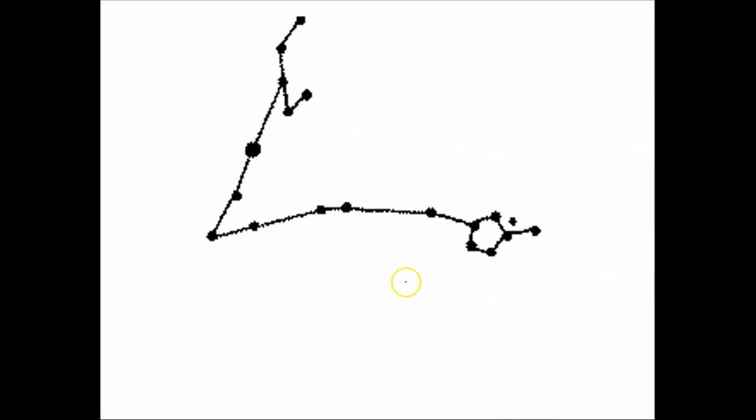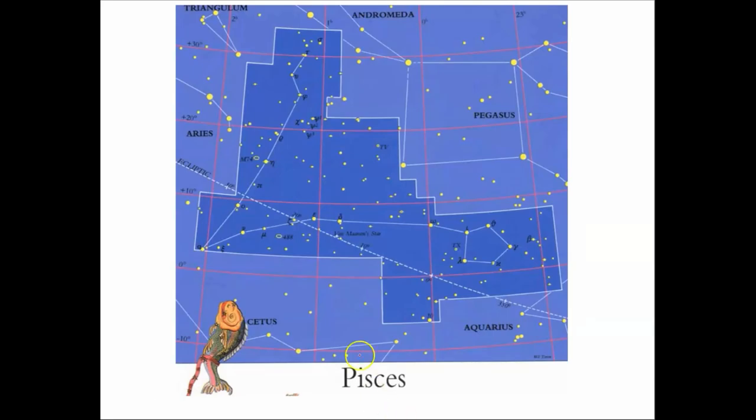We have Pisces. This right there is the asterism where we recognize the classic two fish depiction. But the constellation itself of Pisces is this section or area of the night sky. So that's the constellation of Pisces where the asterism is within the constellation of Pisces.